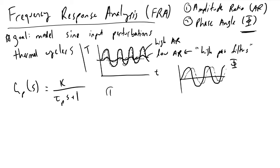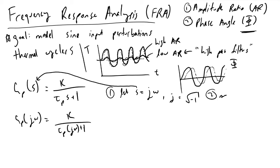What we do first to figure out both AR and phase angle is we're going to let s equal j omega, where j is the equivalent to the square root of minus one. So we're going to be working with imaginary numbers throughout frequency response analysis. What we do next is substitute that in. So we plug this in for s, we will get gp of j omega is equal to k divided by tau p times j omega plus one. And the next step is we multiply by the complex conjugate.